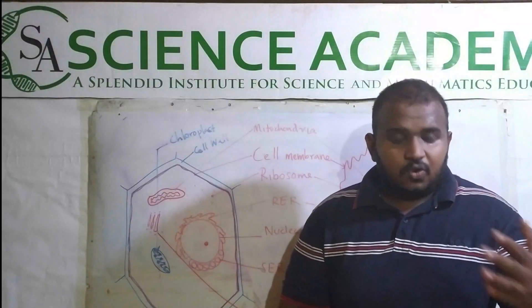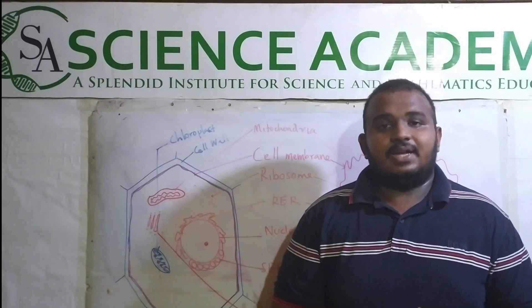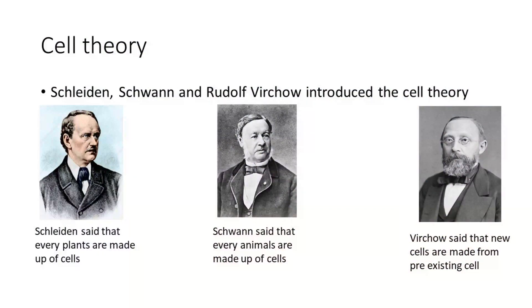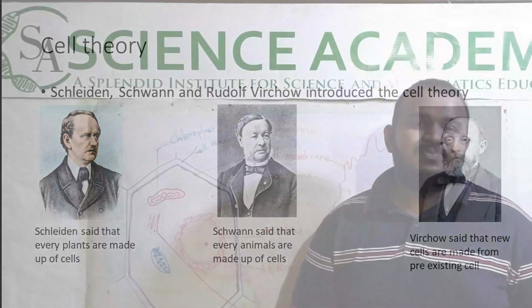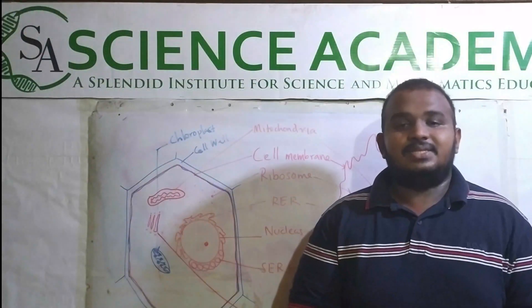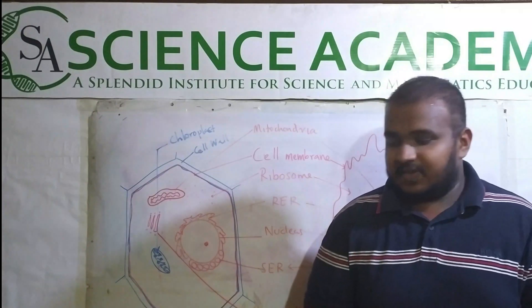Also, the followers of these scientists — Swann, Schleiden, and Virchow — revealed the cell concept. Swann said that every animal body is made of cells. Schleiden said that every plant is made of cells. Virchow said something different: that every new cell is derived from pre-existing cells. By combining these three contributions, the cell concept was revealed.